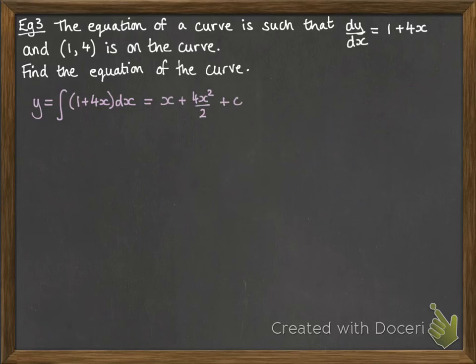we get each term, we're raising the x bit to the power, the power of the x to, raising the power of x by 1 and dividing by the new power. Do each term at a time. So we get x plus 4x over 2 and then a plus c at the end. So simplifying that, we get x plus 2x squared plus c. Now we're actually given a point on the curve, so we can use that to work out what c would be.